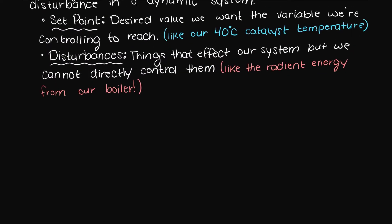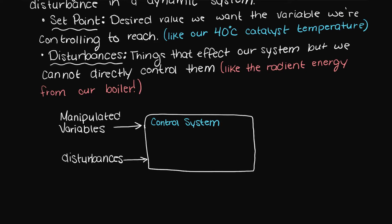We typically represent control systems using block diagrams. So let's create a control system using a simple block diagram. Our inputs to the control system will be our manipulated variables. These are the things that we can control, like the coolant flow rate around the tank. And our disturbances are things that we cannot control, like the radiant energy emitted by the boiler. At the output we will have our desired temperature, which we said was 40 degrees C.